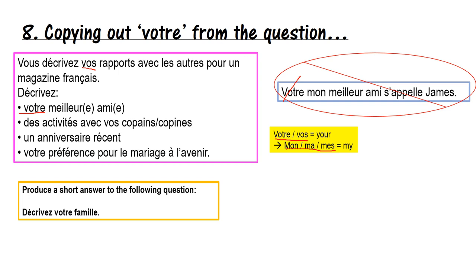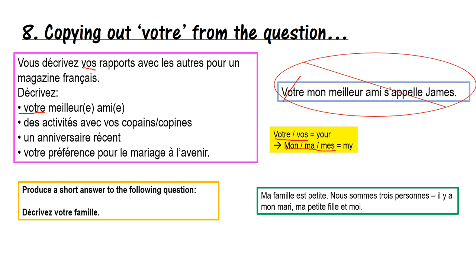Please produce a very short answer to: 'Décrivez votre famille.' Here's my example: 'Ma famille est petite' — my family is small. 'Nous sommes trois personnes' — we are three people. 'Il y a mon mari, ma petite fille et moi' — there is my husband, my daughter and me. You can see I've not said votre, I've said ma — that's the main thing.